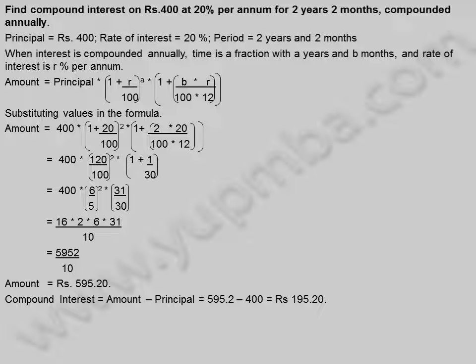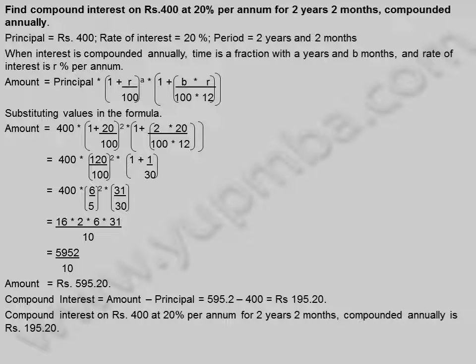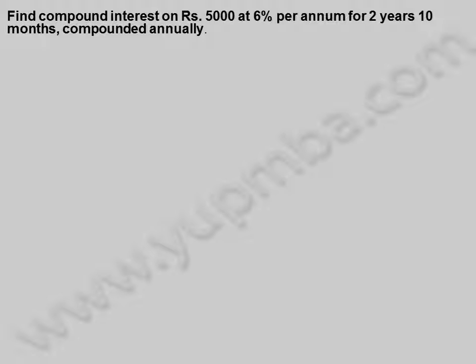Compound interest on 400 rupees at 20% per annum for two years two months compounded annually is 195.20 rupees. Let us see another example: find compound interest on 5,000 rupees at 6% per annum for two years ten months compounded annually.